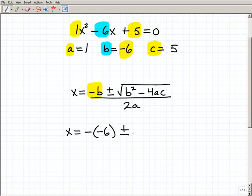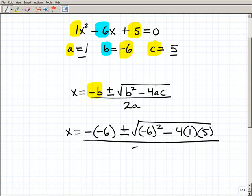Minus of minus 6 is minus b, because b was negative 6. Plus or minus, I'm just kind of following the formula here, b squared minus 4ac. Now, b squared is going to be minus 6 squared minus 4 times a, and a was 1, times c, and c was 5. So I'm going to put that right here. All over 2 times a, and of course, a was 1. All right, so that's the basic setup.